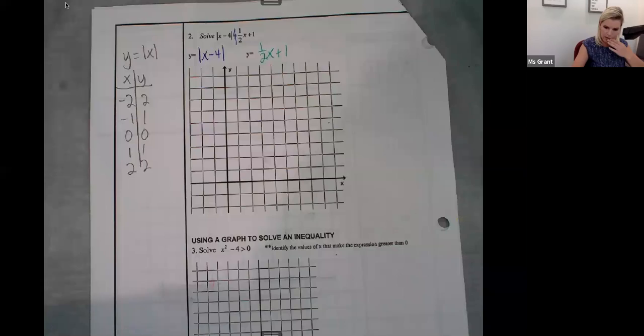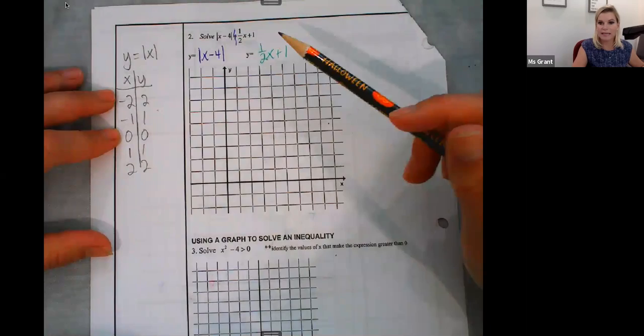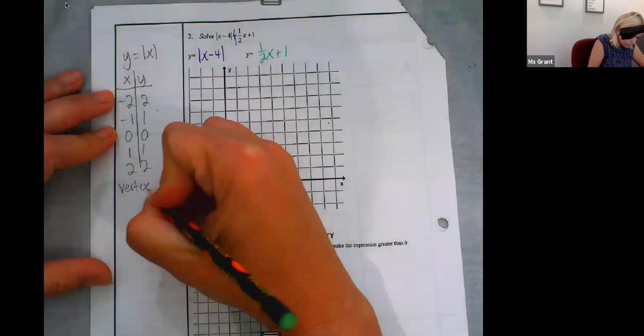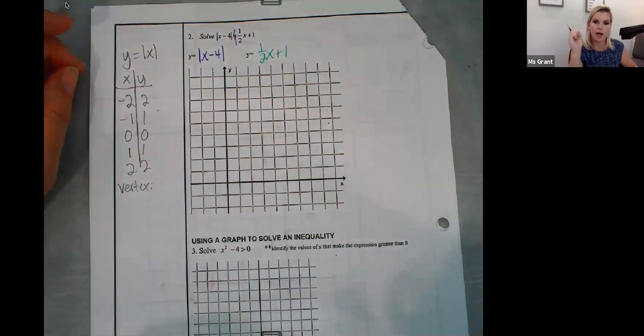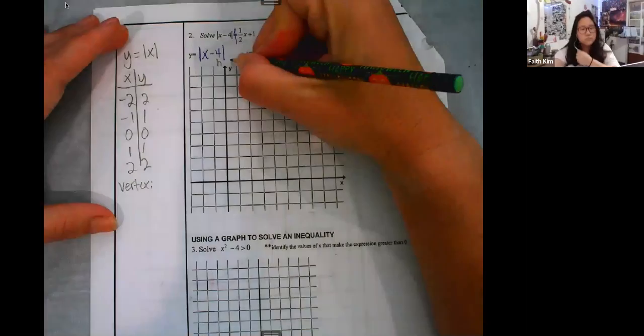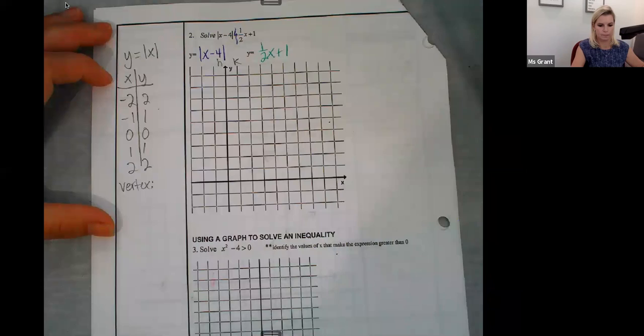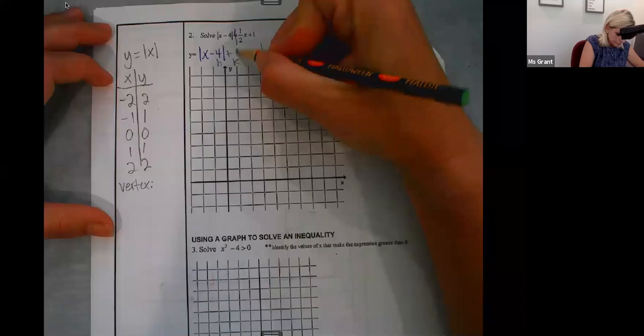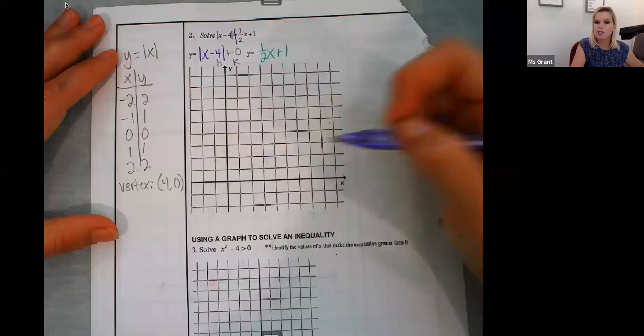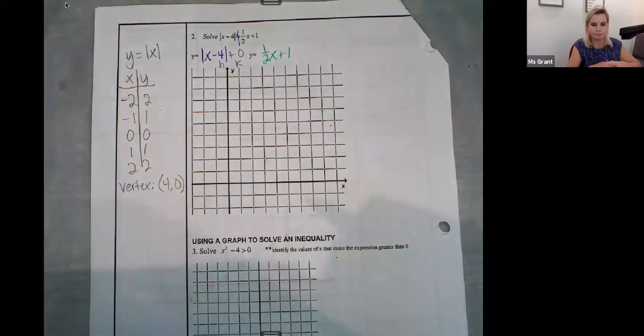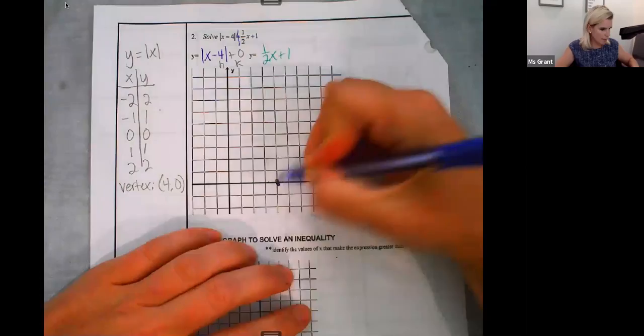So parent function, I don't know that you necessarily need to write down, but I do want to know what the vertex is. That matters to me. Faith, are you volunteering to help me? Yeah. What's my vertex for my absolute value function? It's 4, 0? Yep. H, K. 4 comma 0. It's purple. I'm going to just go by ones here.